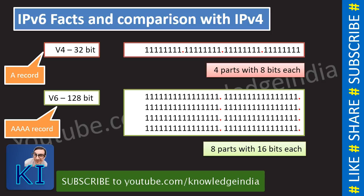If you are dealing with any DNS service — it could be Route 53 or any other — the corresponding records you create are A records and Quad-A records. If you want a domain like www.knowledgeindia.in to resolve to an IPv4 address, you use an A record. If you want it to resolve to an IPv6 address, you use a Quad-A record (AAAA). Note that 32 × 4 = 128, which is also a useful way to relate the two.